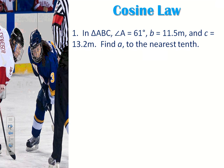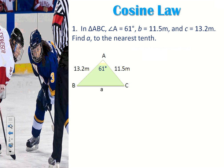Here's an example. In triangle ABC, angle A equals 61 degrees, little b is 11.5 meters, and little c is 13.2 meters. Find little a to the nearest tenth — that's one decimal place. I drew a diagram and filled in all the information, labeling little a because that's what I'm looking for. Notice that there aren't any partners: I'm missing angle A's partner, and the partners for b and c are also missing. So there's no way to set up sine law, and that's when I know to use cosine law.